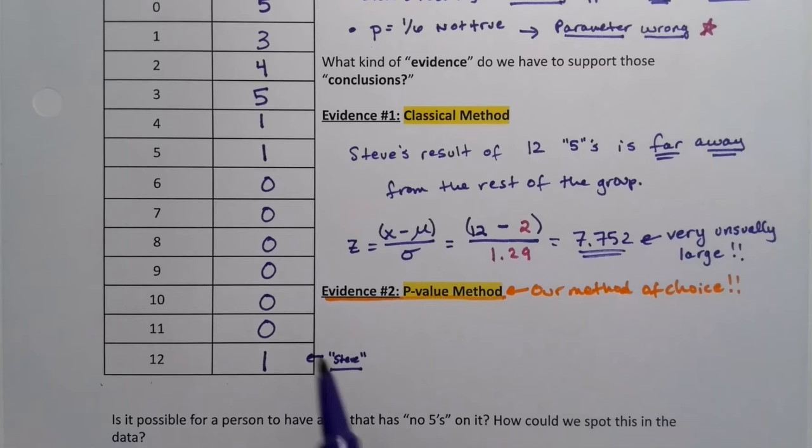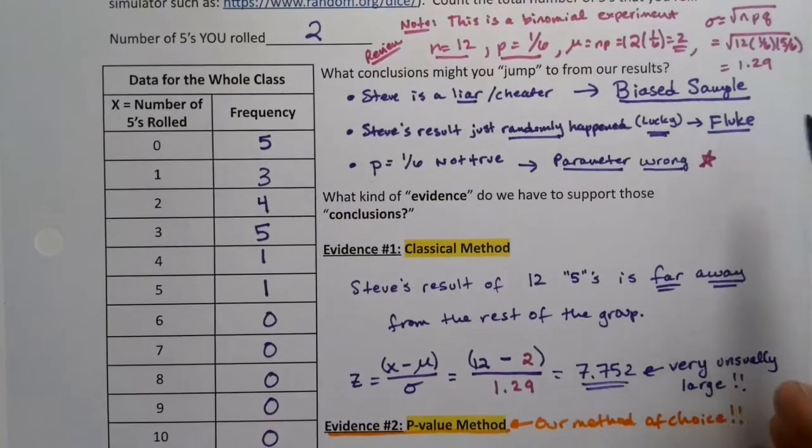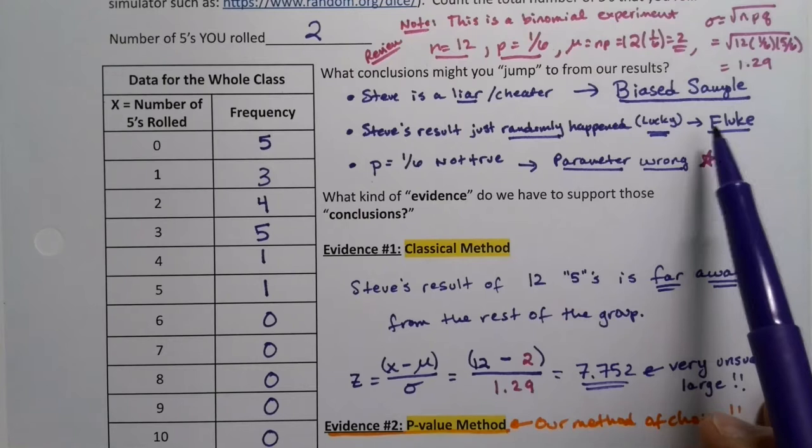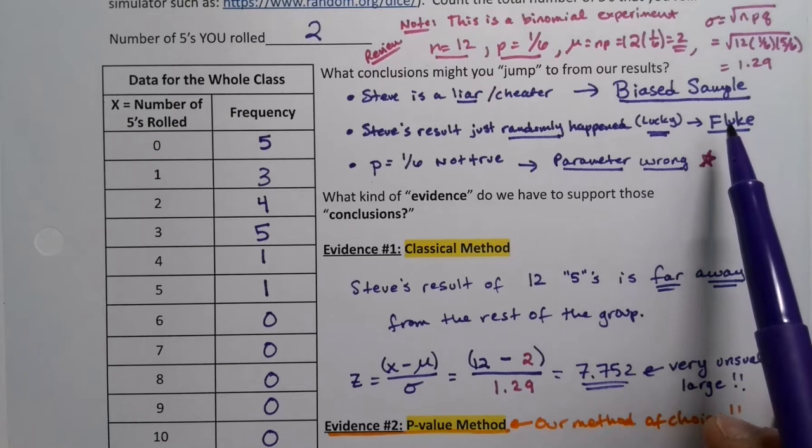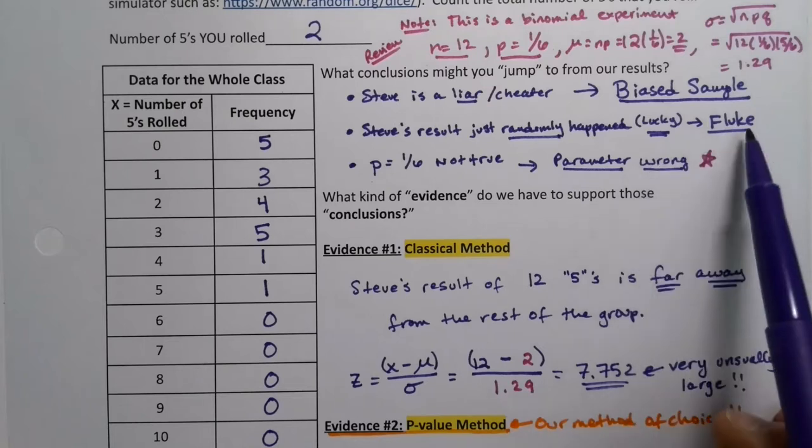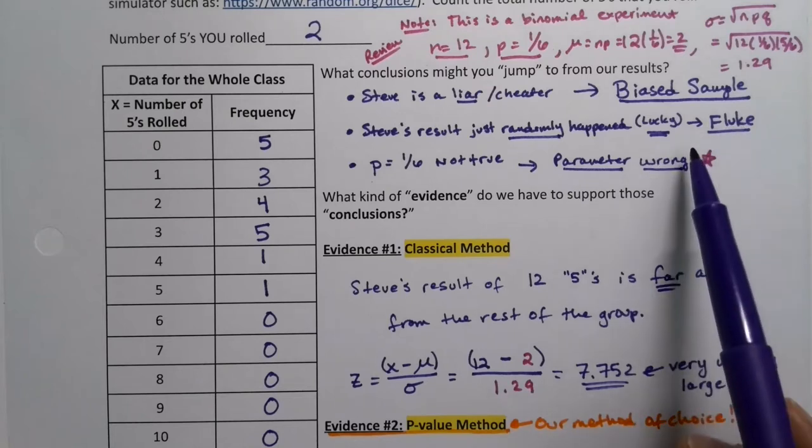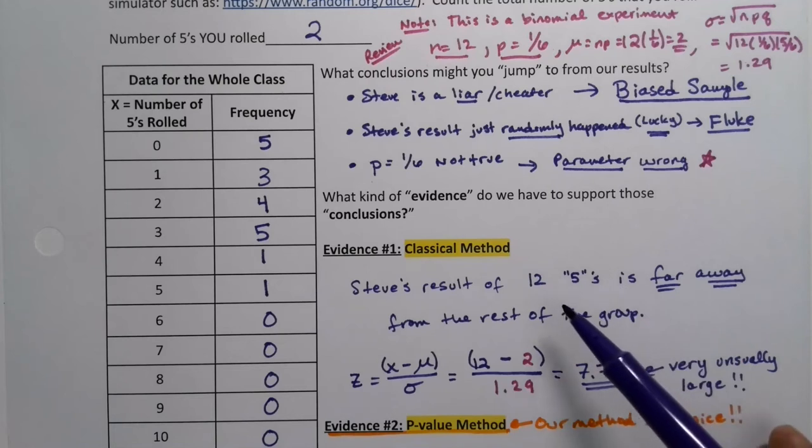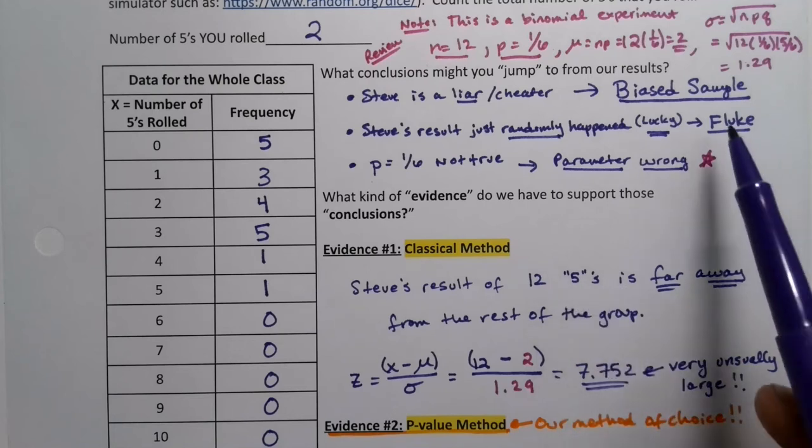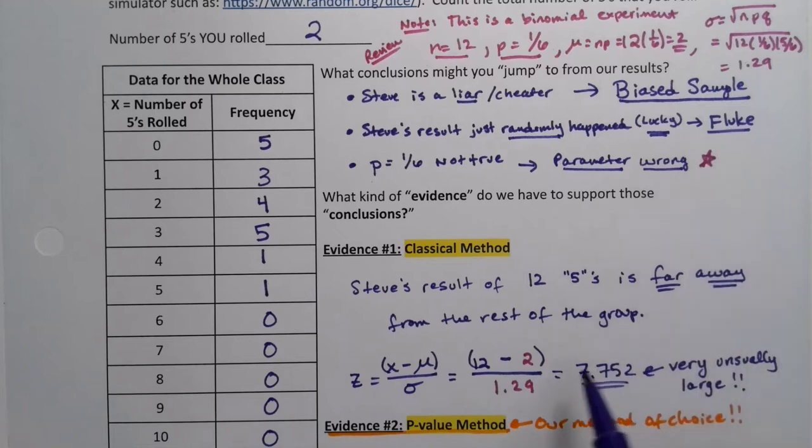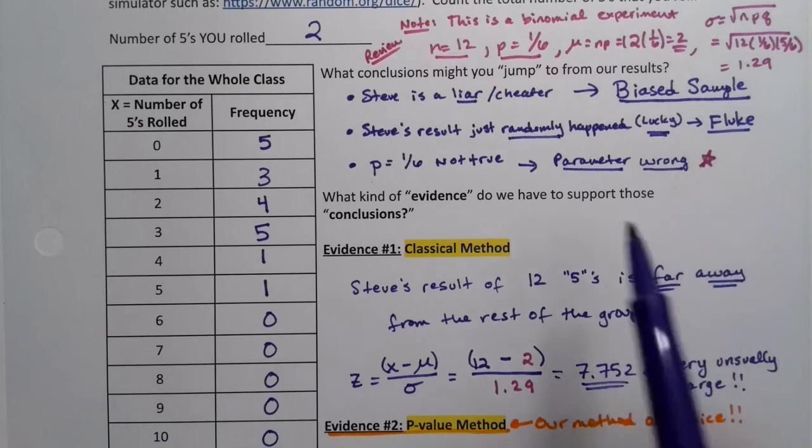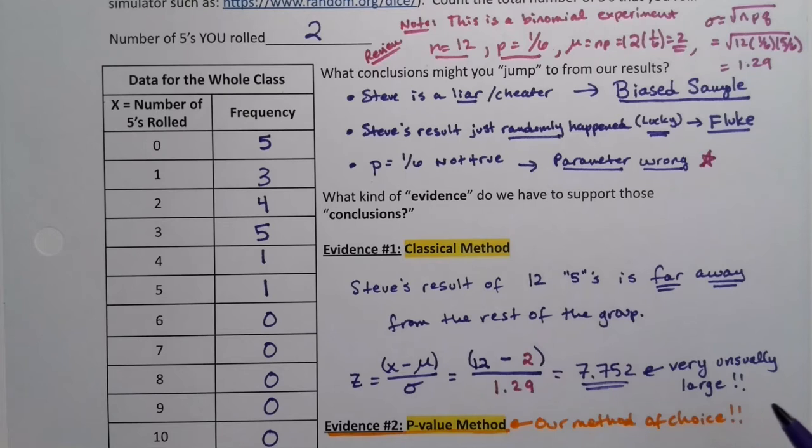Now what's the p-value method? Well the p-value method is what's the probability of getting this result? If you're going to tell me my sample is out because it could be a fluke, I want to know what the probability of that fluke is. When we did the classical method we were basically saying he's too far away for it to be a fluke, it's this third option, the parameter's wrong.